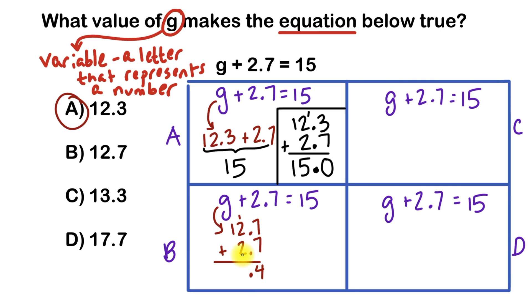I've got 2 plus 2 is 4, plus this 1 is 5. And then 1 plus nothing is 1. And unfortunately, that is absolutely incorrect. The reason why is it's not equal to 15, it's equal to 15.4. Therefore, G cannot be 12.7.